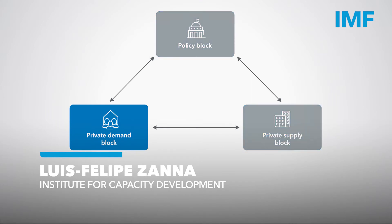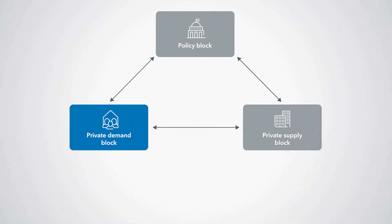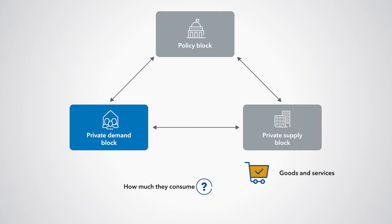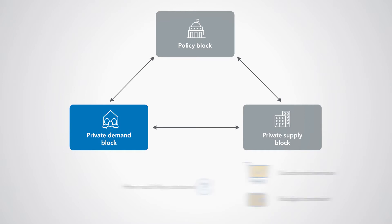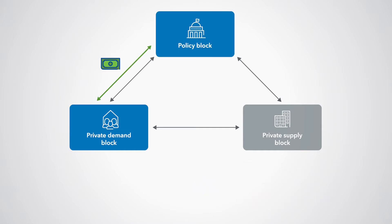The Private Demand block describes the behavior of households. They decide how much to consume by maximizing the expected discounted flows of utility — the happiness they derive from consuming goods and services — while being subject to a budget constraint. All households pay taxes on their income and consumption and receive transfers from the government.